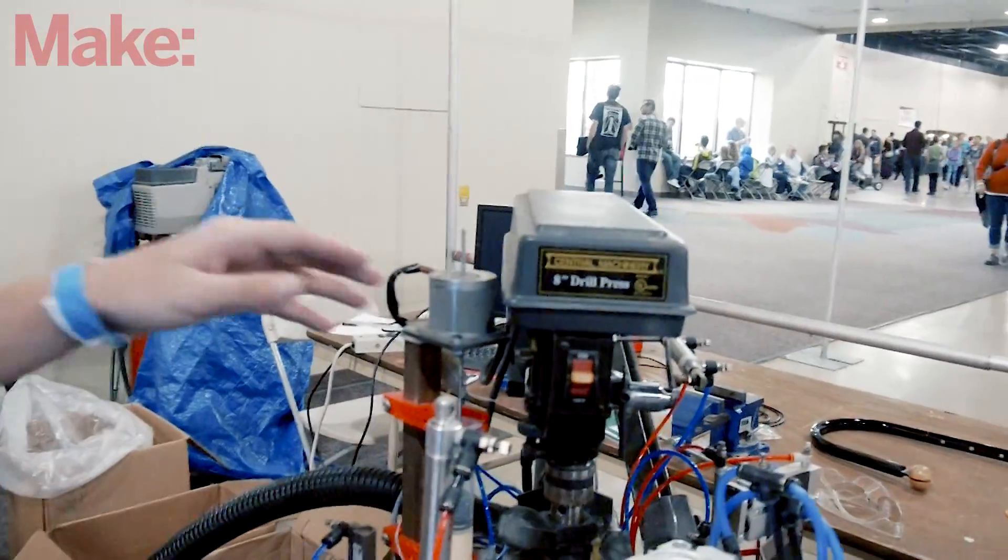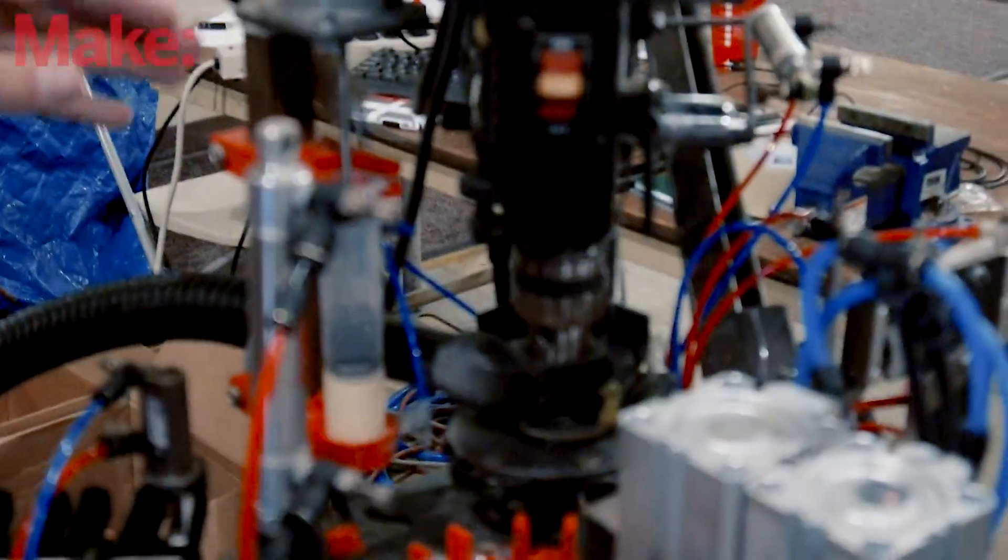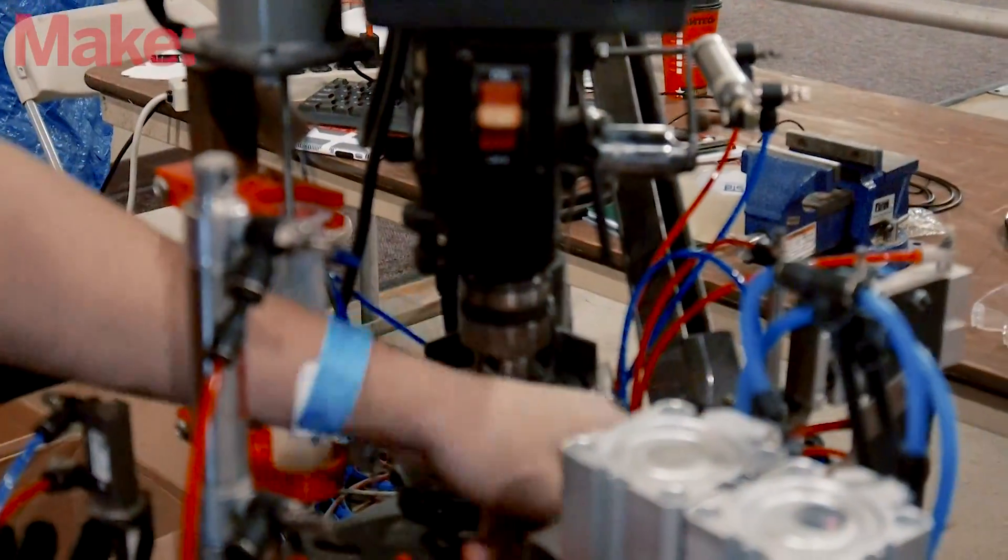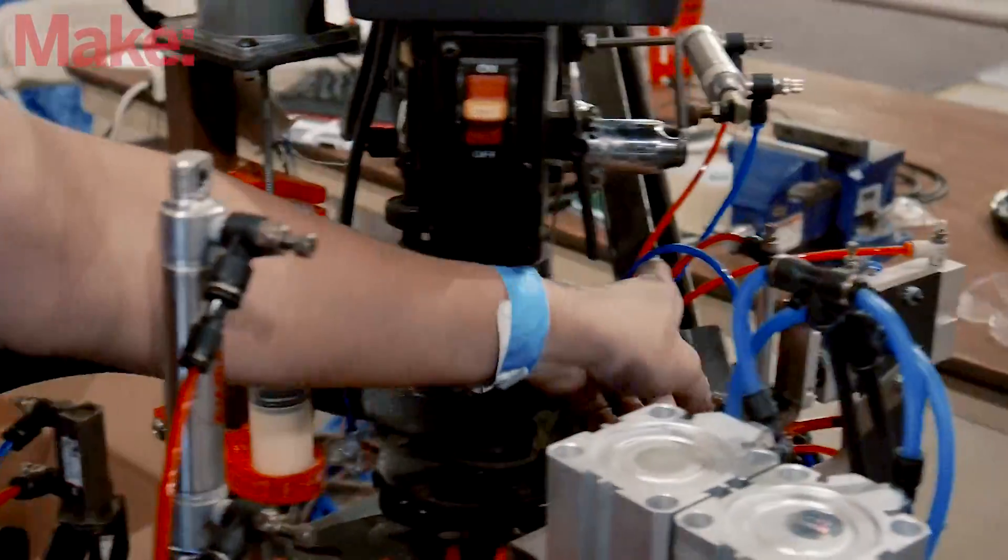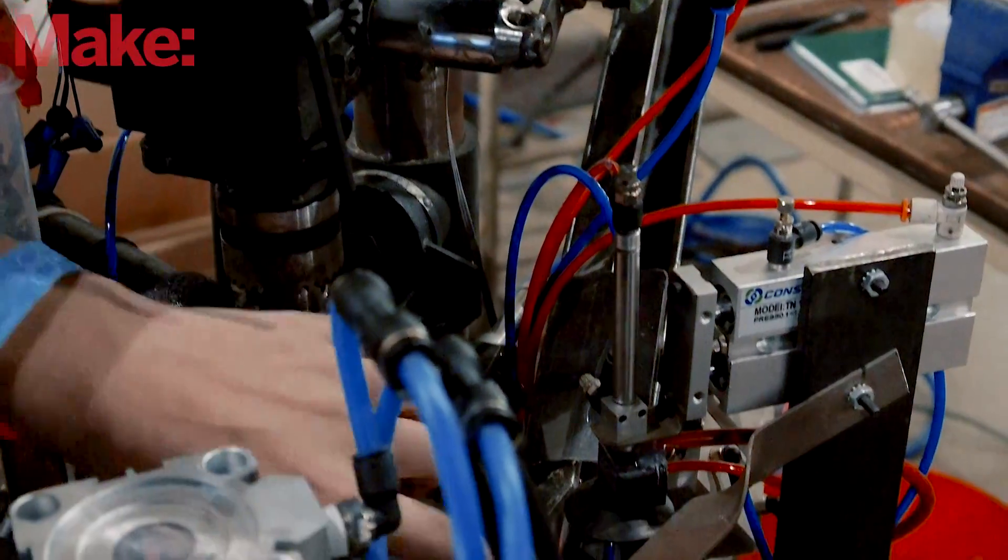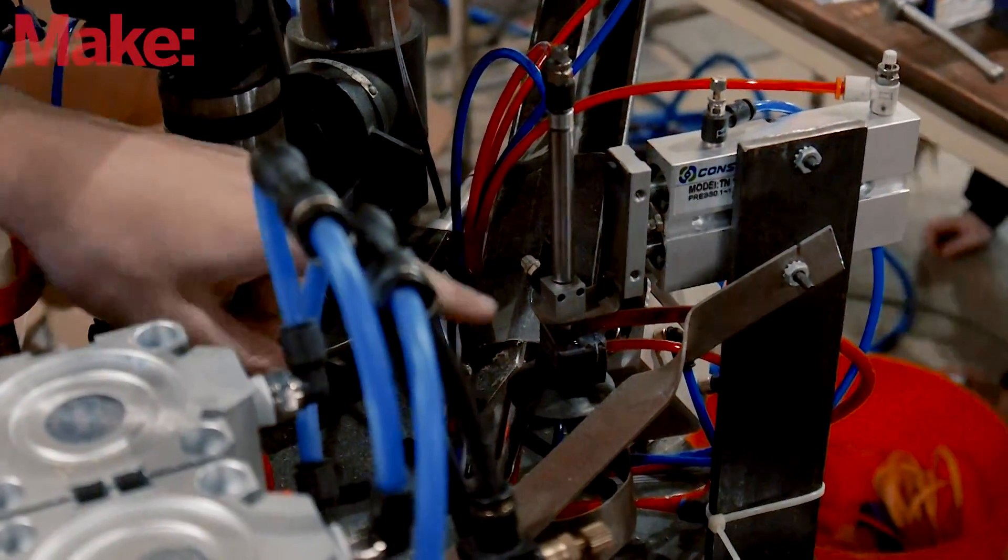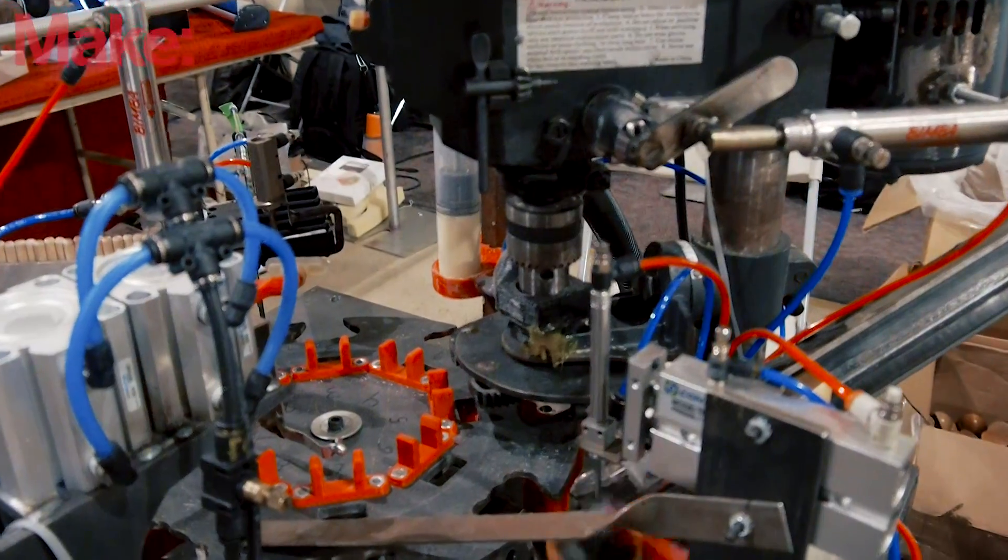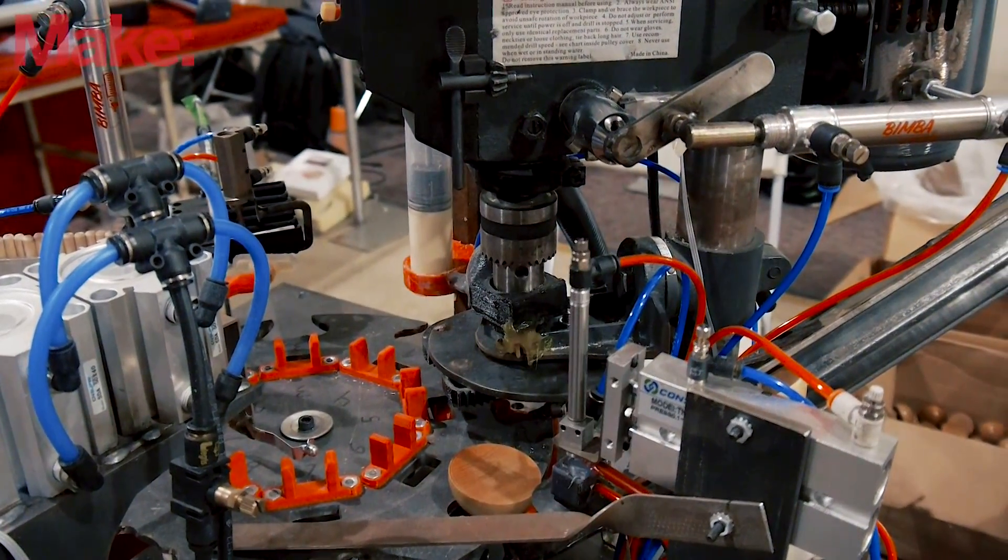So the first step in this whole process is this station right here. The heads, which are semicircles, slide down this rail, they drop in here. This detects that there's something there, goes down and picks it up, and places it into this slot right here.